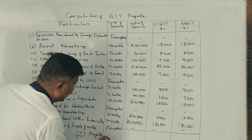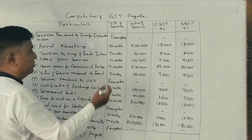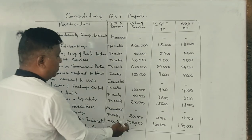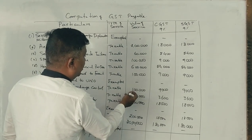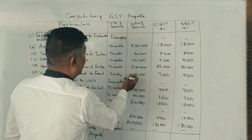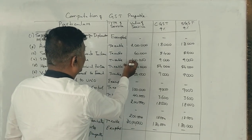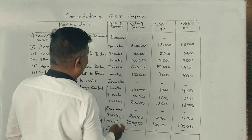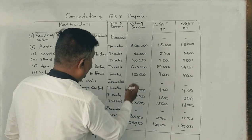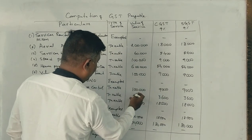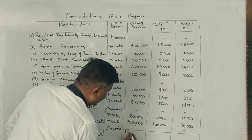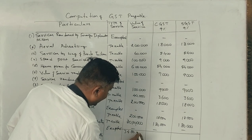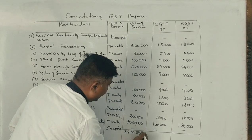So, if you check the totals — the taxable value is 14 lakhs and total is 21 lakhs approximately.